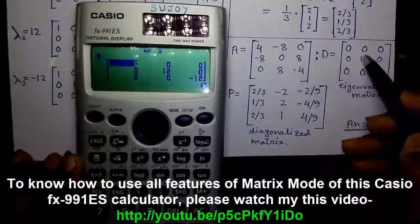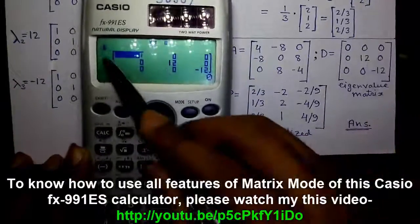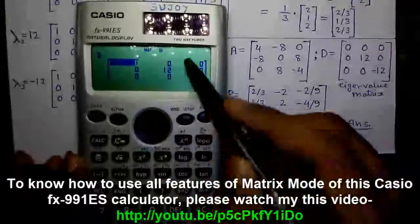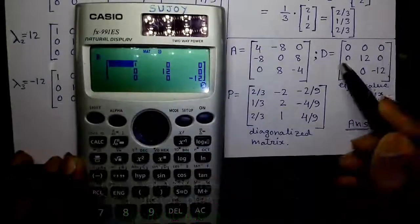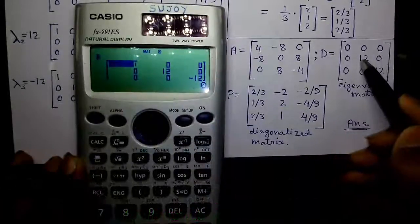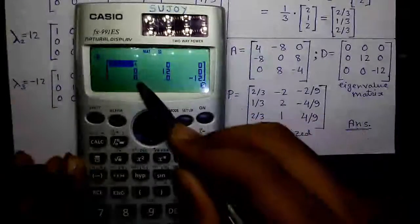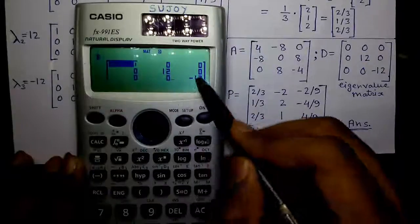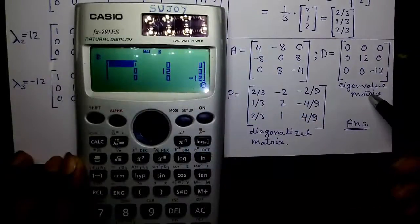Next, this matrix D is stored at matrix B. That is 0, 0, 0, 0, 12, 0 and 0, 0, minus 12. That is our eigenvalue matrix.